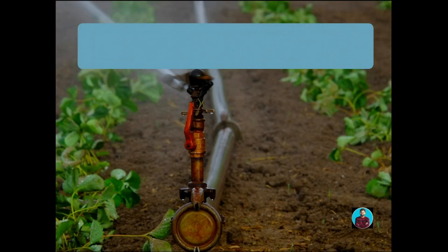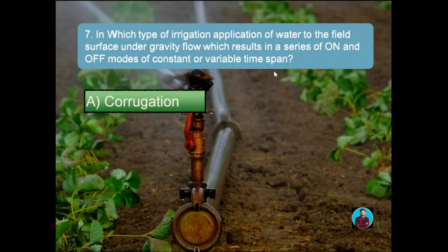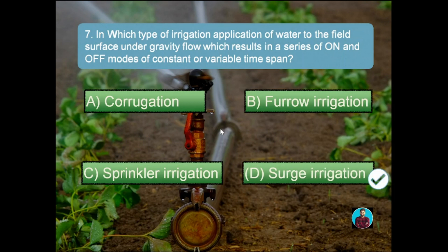Question number seven: in which type of irrigation is water applied to the field surface by gravity flow, resulting in a series of on-and-off modes of constant or variable time spans? Options: A: Corrugation, B: Furrow irrigation, C: Sprinkler irrigation, D: Surge irrigation. The right answer is surge irrigation. Corrugation is primarily used to irrigate non-cultivated and close-growing crops using small, closely spaced channels on the slope. Furrow irrigation is the oldest method, also called flood irrigation. Sprinkler irrigation, also called spray irrigation, applies water in a controlled manner similar to rainfall.